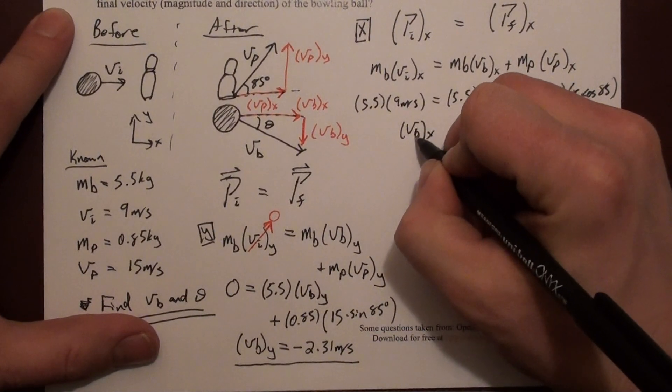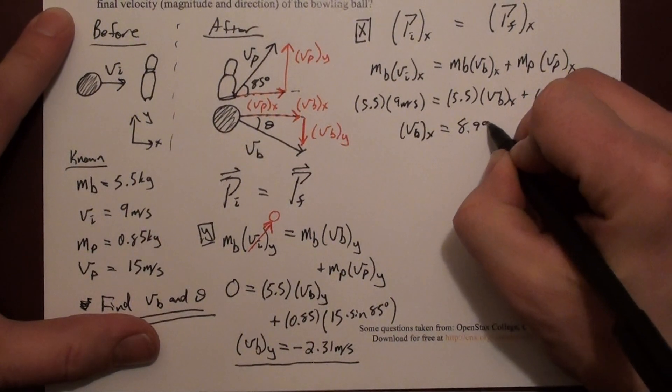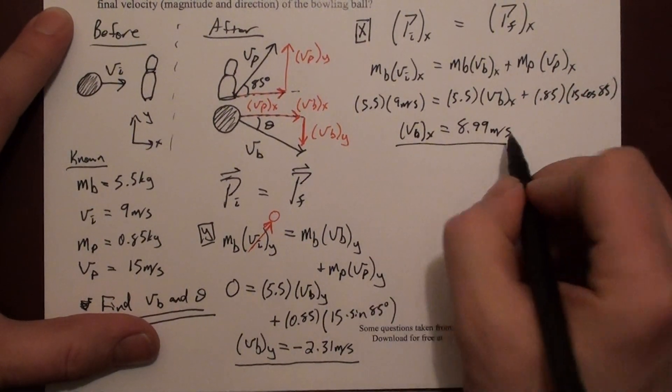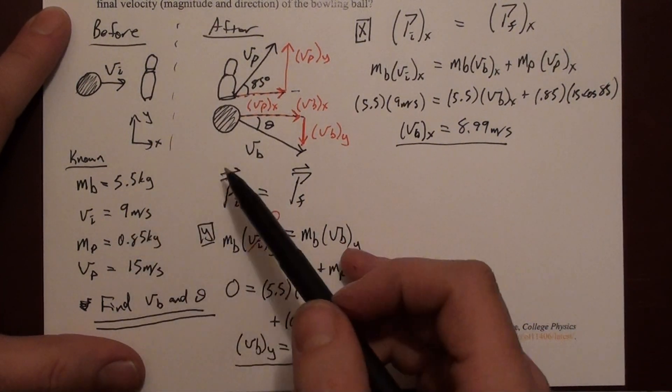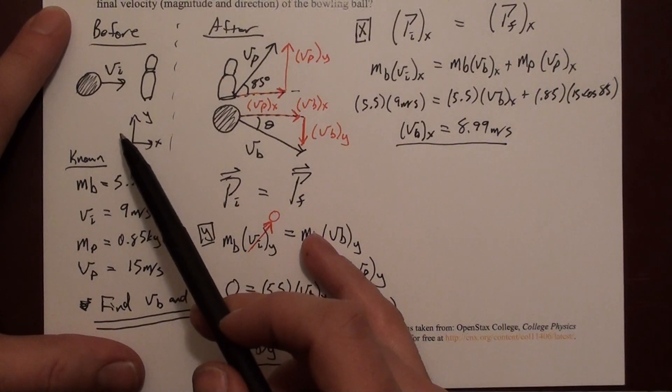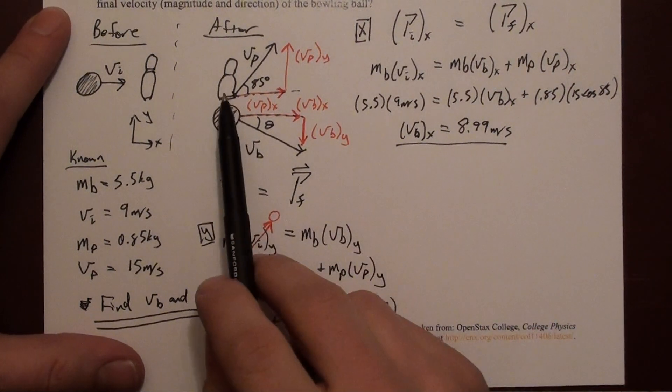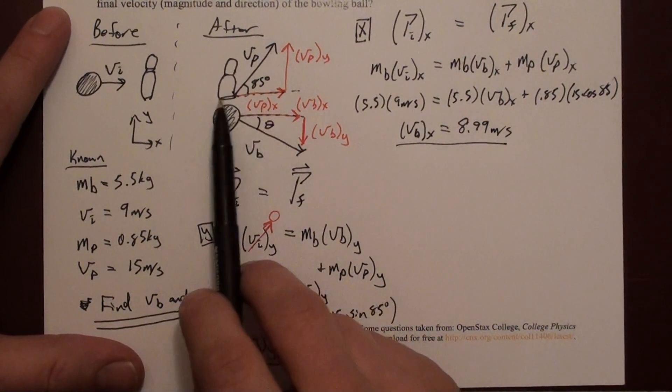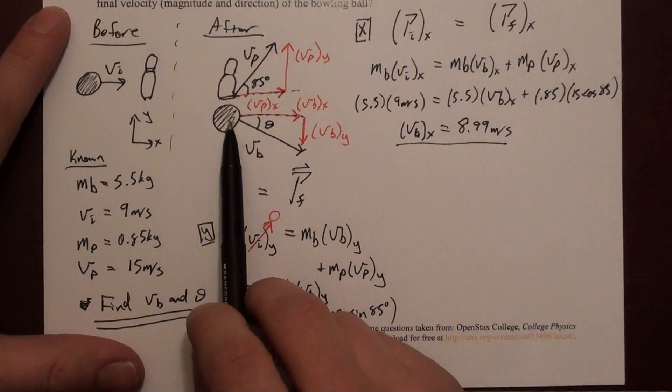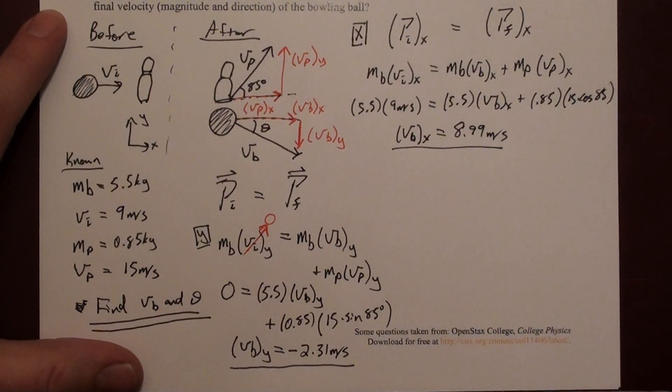If I solve that for vb x, what I get is 8.99 meters per second, which is very close to what I had originally. That makes sense because this bowling ball is quite a bit more massive than the bowling pin. And the pin moves off almost vertically, at 85 degrees, so it carries off very little forward momentum. So the bowling ball has to take most of it in order for momentum to be conserved in both the x and y directions.